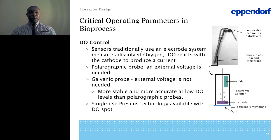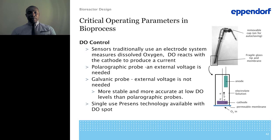For DO control: you can get either invasive probes that contact your culture or non-invasive probes that do not contact your culture inside the bioreactor. The polarographic probe requires an external voltage supplied by the controller. The anode and electrode solution are needed in order for the probe to give you an accurate and correct operating reading.